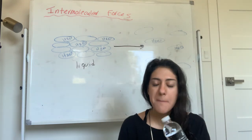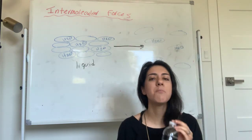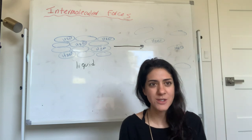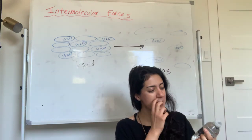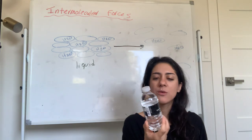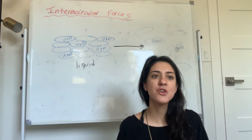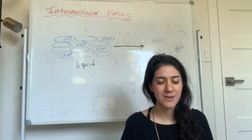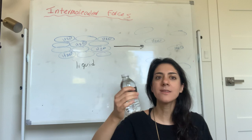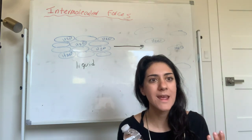There are probably millions of water molecules in here right now. If there are millions of water molecules in here, how are they held together and not running away from each other? Why is that?